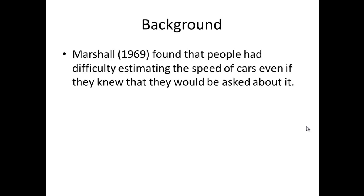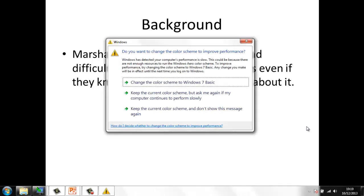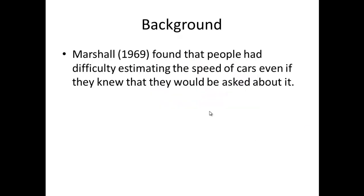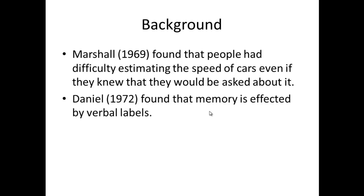What prompted them to do this study? Elizabeth Loftus had been doing a lot of research into memory anyway, and it followed on from some other studies. Marshall in 1969 found that people had difficulty estimating the speed of cars, even if they knew they would be asked about it. People tend to be better when the cars are going slightly faster, around 40 miles per hour. At slower speeds, they tend to massively overestimate how fast the cars are going. Daniel in 1972 had already found that memory is affected by the verbal labels that you attach to it. So Loftus and Palmer were putting those two factors together in their experiment.